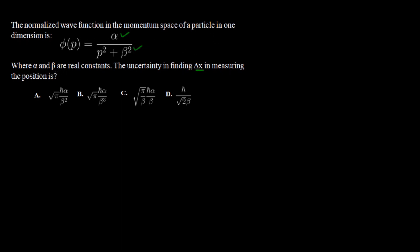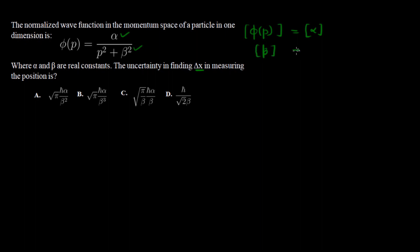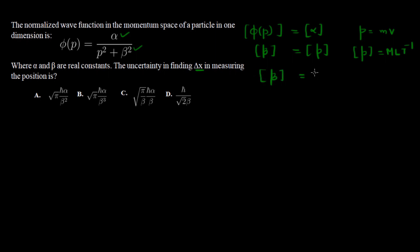To find the dimension of β, note that in φ(p) = α/(p² + β²), the term β² must match p² dimensionally, so β has the dimension of momentum P. Momentum P = mv has dimension MLT⁻¹. So we have the dimension of β as MLT⁻¹.